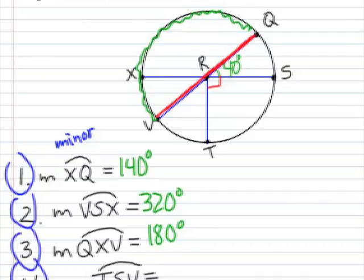Number four, the measure of arc TSV. TSV would be here. Again, three letters to denote a major arc.